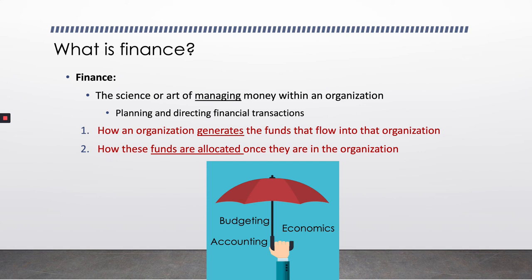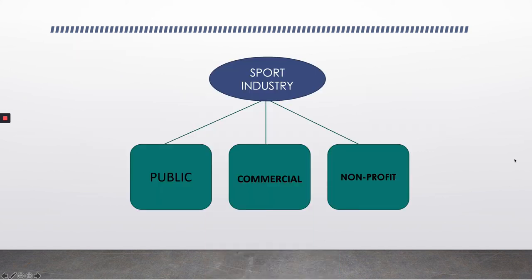It's important to note that organizations are trying to make sound financial decisions, and we'll talk about the various types of sport organizations and how that might differ for each one. As we think about the sport industry and financial implications, it's important that we start by acknowledging that there are different sectors of the sport industry, and the difference in sector is certainly going to impact the way those organizations look at finance.